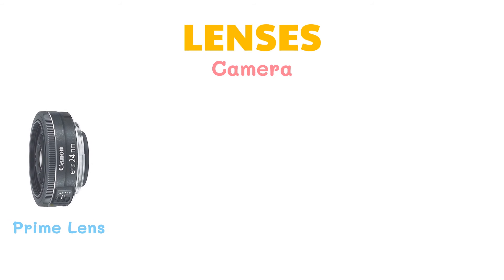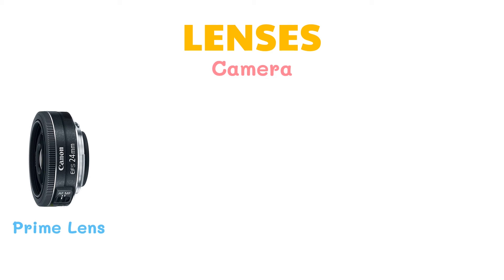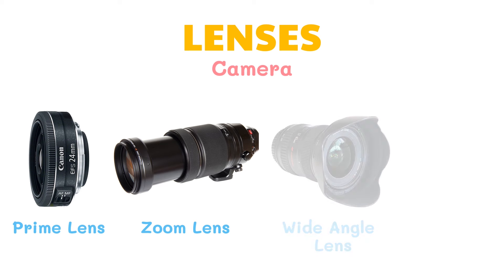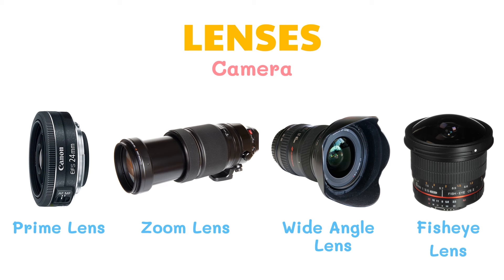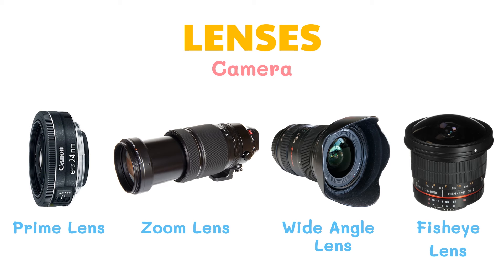A prime lens is a basic lens with a fixed focal length, and a zoom lens has a variable focal length, so you don't have to physically change your location to get something in focus. A wide angle lens is a type of lens with a very small focal length that dramatically increases the field of view. And a fisheye lens is essentially an extreme version of a wide angle lens.